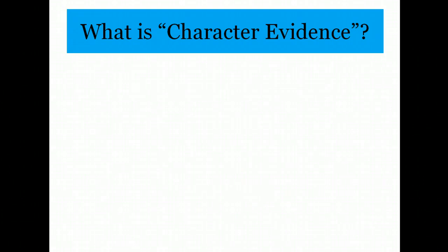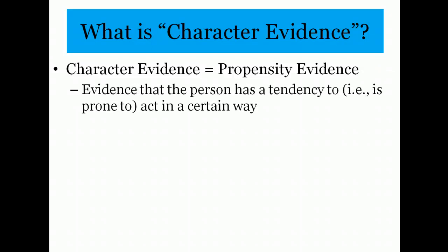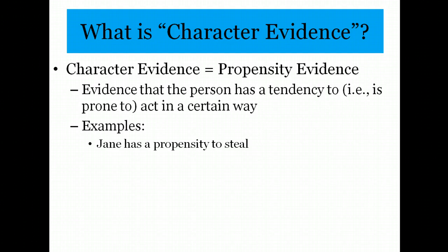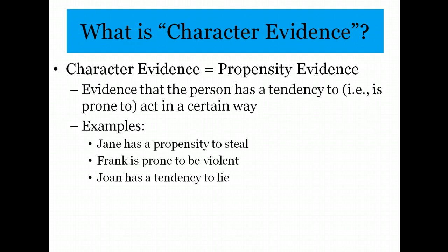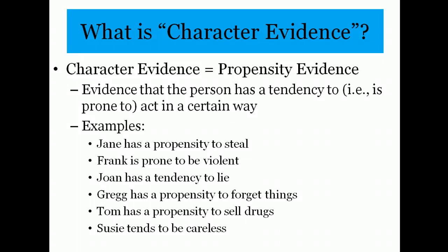Under the evidence rules, the term character or trait of character refers to a propensity to behave in a particular way. When we talk about character evidence, we mean evidence that a person has a tendency or propensity to act in a particular way. These propensities can be general or specific. For example, the rules would cover evidence showing that Jane has a propensity to steal, Frank is prone to be violent, Joan has a tendency to lie, Greg has a propensity to forget things, Tom has a propensity to sell drugs, or Susie tends to be careless.